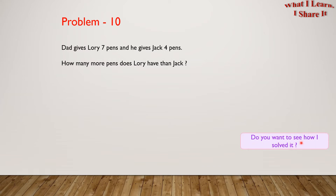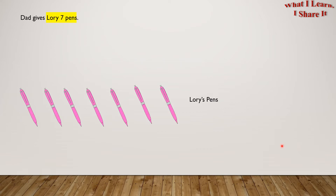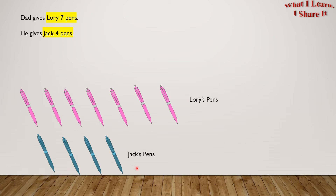Do you want to see how I solved it? I solved it in a step-by-step way. Let's see it! Dad gives Lori 7 pens — here are Lori's 7 pens. You don't have to draw real pens; you could draw any shape you want for it. He gives Jack 4 pens, so here are Jack's 4 pens.